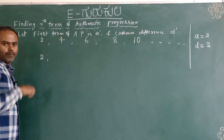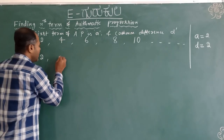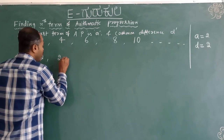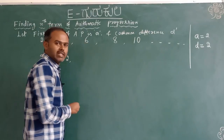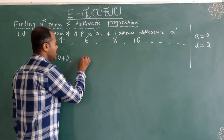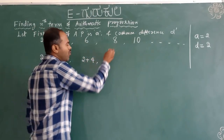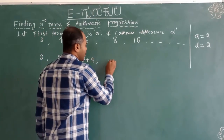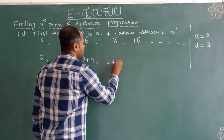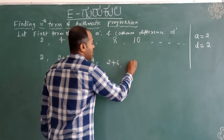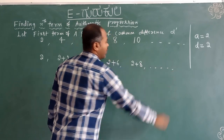The second term is 2 plus 2, the third term is 2 plus 4, the fourth term is 2 plus 6, and the fifth term is 2 plus 8, and so on.